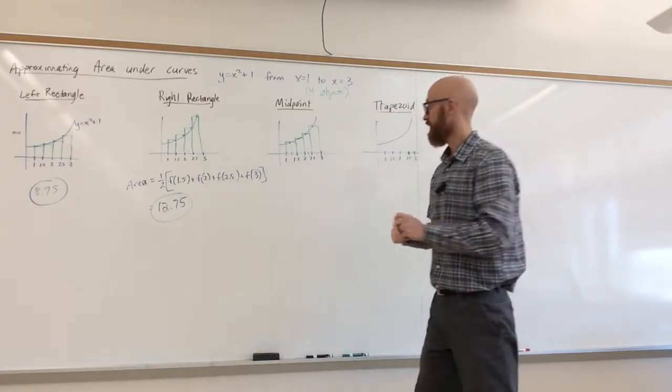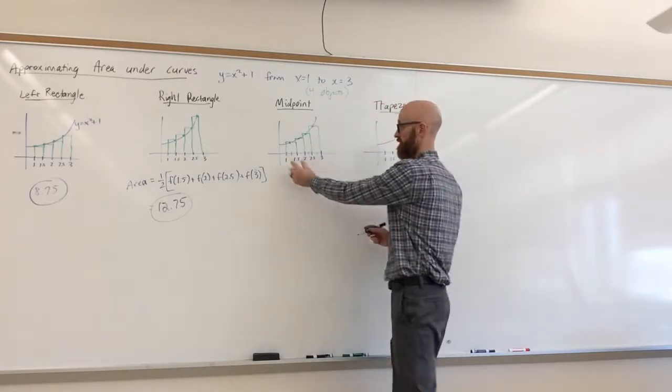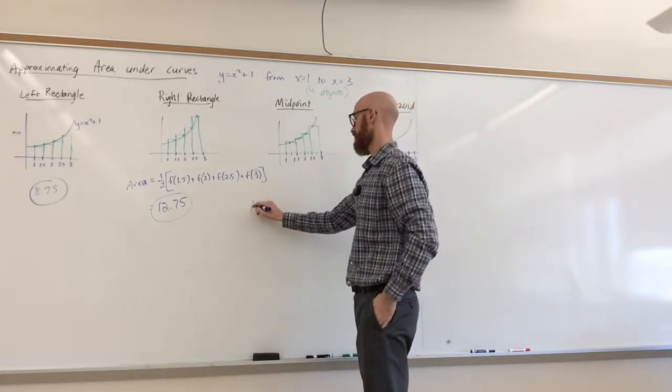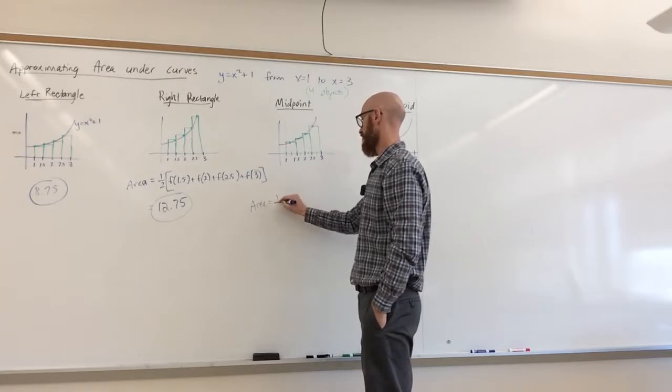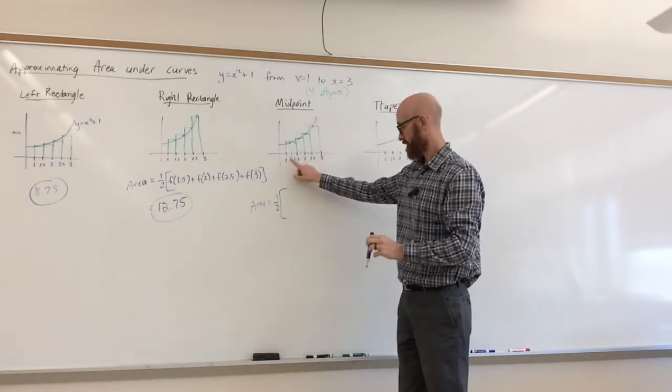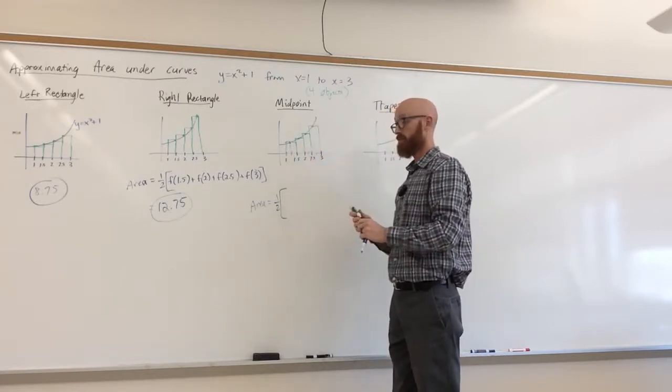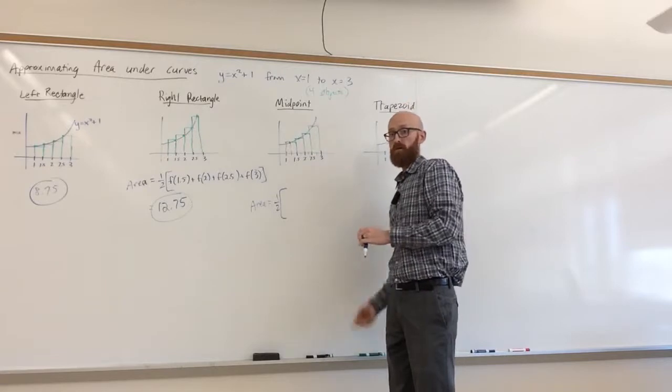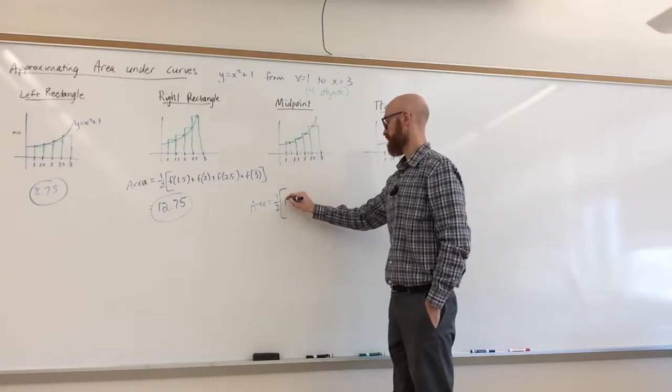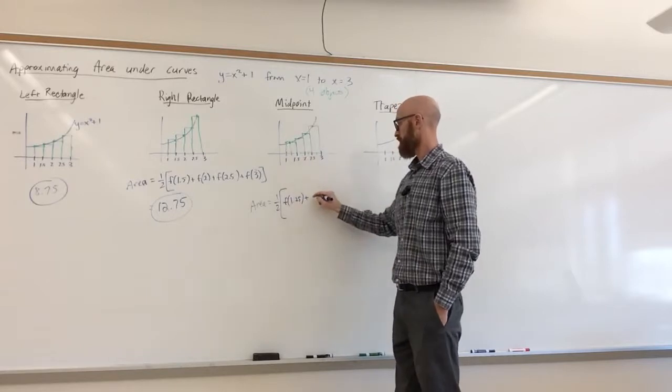So to write the area, each rectangle is again of width 1 half or 0.5. It goes from 1 to 1.5. So the area here will be a half, and now we just have to figure out the height of each rectangle. Well, the first rectangle's height is determined by the middle of 1 and 1.5, which is 1 and 1 quarter. So we do f of 1 and 1 quarter. Then 1 and 3 quarters.